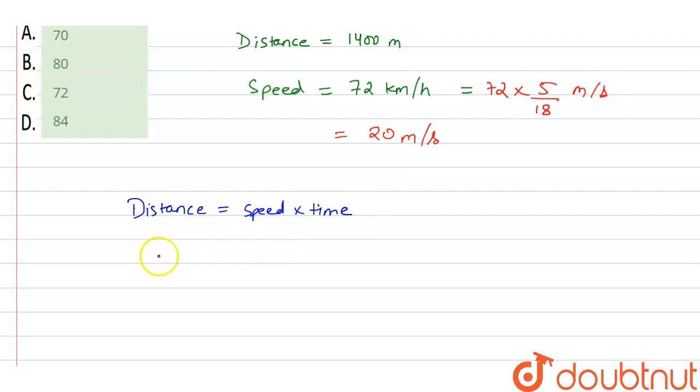Distance is 1400, speed given 20 meter per second, into time. So now see, time will be equal to 70 seconds.